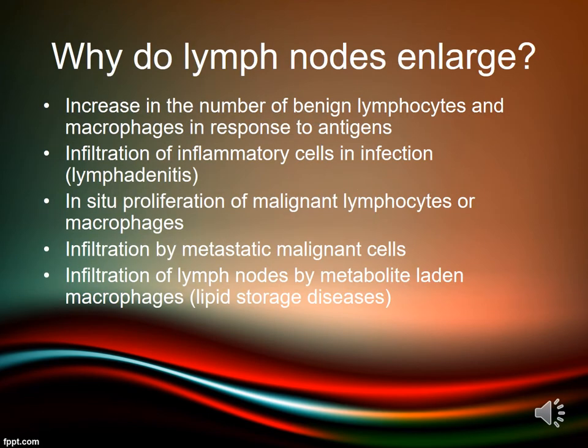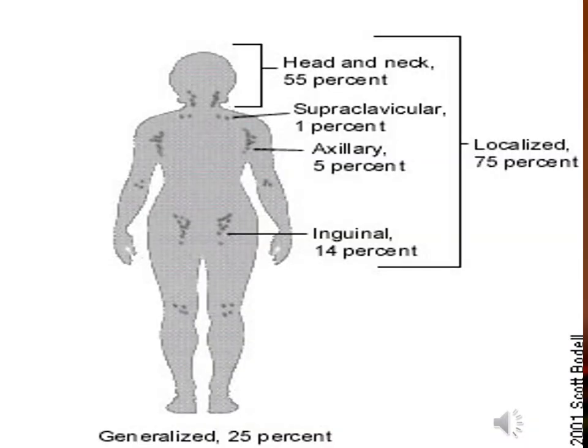There are multiple mechanisms of lymphadenopathy: increase in number of benign lymphocytes and macrophages in response to antigens, infiltration of inflammatory cells in infection (lymphadenitis), in situ proliferation of malignant lymphocytes or macrophages, infiltration by metastatic malignant cells, and infiltration of lymph nodes by metabolite-laden macrophages, for example in lipid storage diseases.